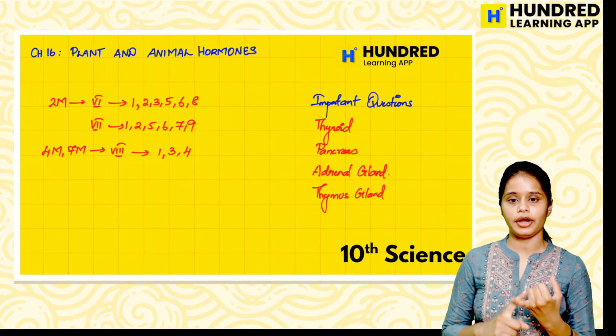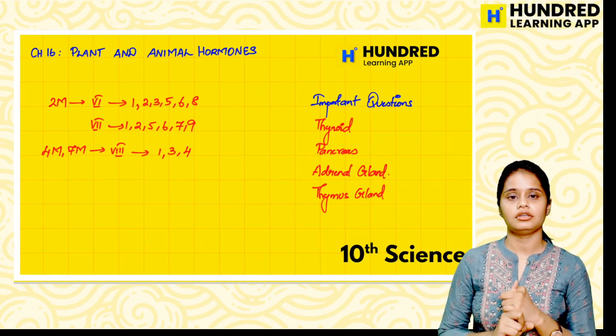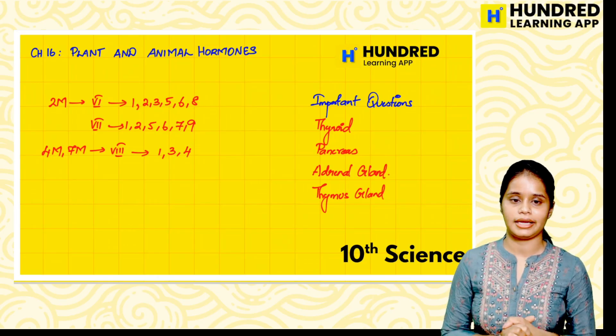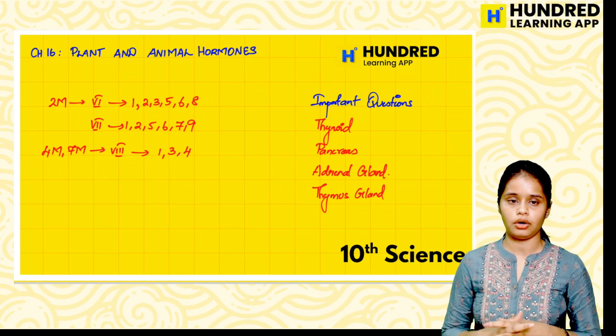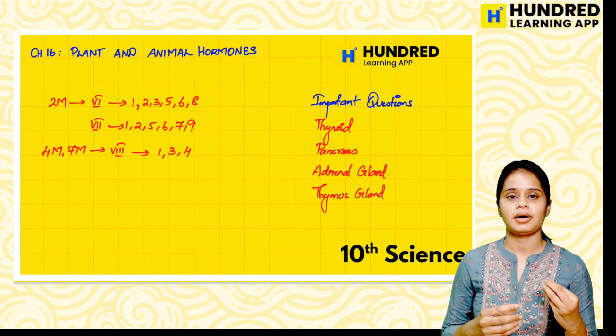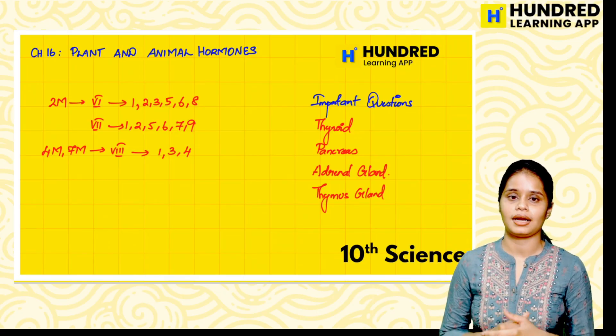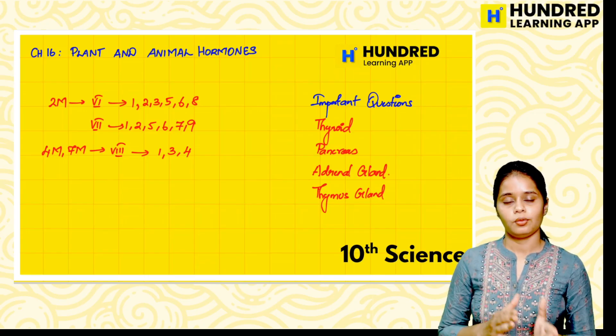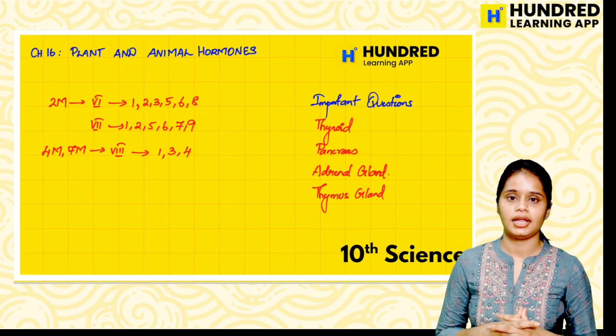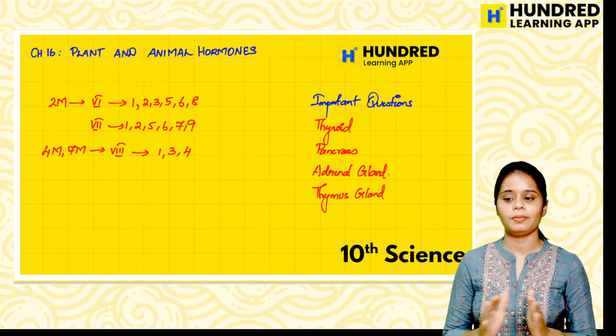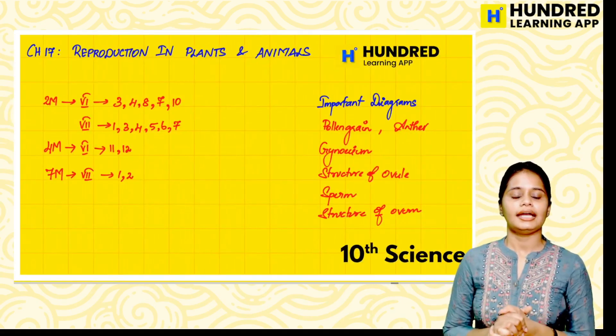And that is Chapter 16. Important diagrams: Thyroid, Adrenal gland, Thymus gland. This is from last year's previous year board exam, so we will learn about this. We have to learn about seven marks subdivision, two marks, four marks. Two marks, four marks - this is the answer in one word in Biology, this is the maximum.